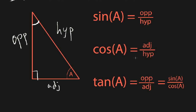Tangent of angle A is the ratio of the opposite side to the adjacent side, which is the same as sine of the angle divided by cosine of the angle. You can see that by dividing opposite over hypotenuse by adjacent over hypotenuse, giving you opposite over adjacent. This means whenever you see tangent of some angle, you can replace it with sine divided by cosine. That's your first example of a trigonometric identity.